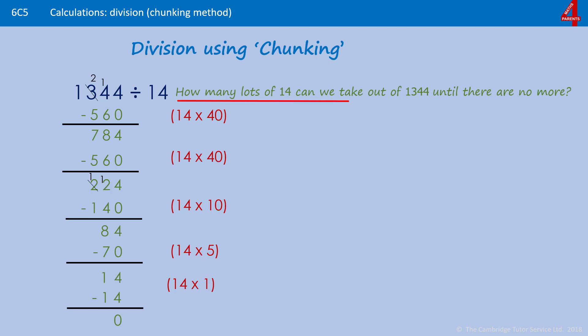Now we need to work out how many lots of 14 that was. We had 40 there, 40 here, then we had 10, then we had 5, and then we had 1 of 14. If we add those together, that's 96 lots of 14.